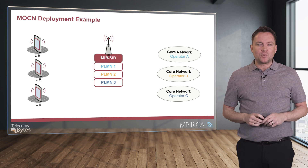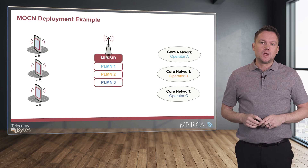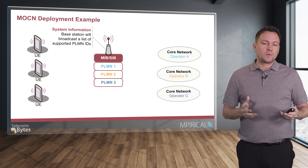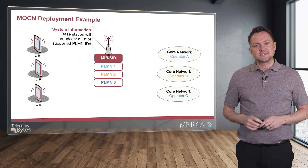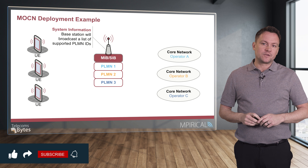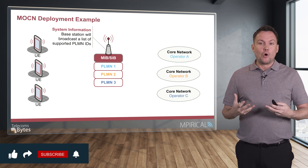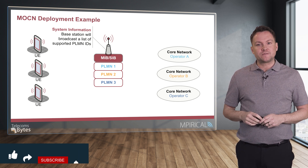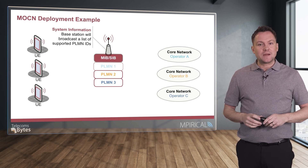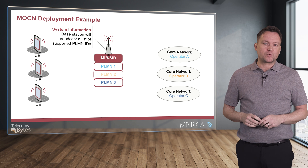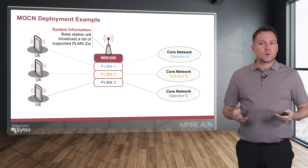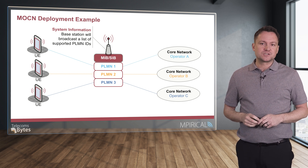In the MOCN example, the base station broadcasts a number of different PLMN identities — public land mobile network identities — meaning it broadcasts the identities of several different mobile service providers, all of whom are sharing the same radio infrastructure but have their own distinct core networks. A subscriber is able to select the appropriate PLMN ID, and they will then be connected to the corresponding core network for that mobile service provider.